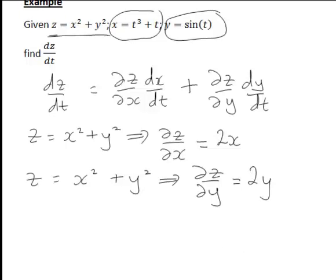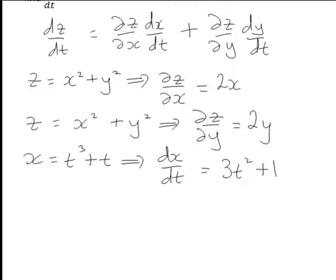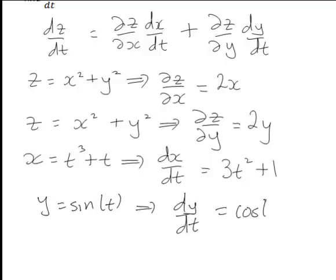Then we're looking at x, which we saw was equal to t³ + t, and the derivative of x with respect to t, dx/dt, is just going to be 3t² + 1, while since y equals sin(t), the derivative of y with respect to t is just going to be cos(t).